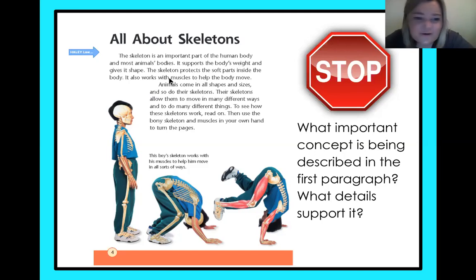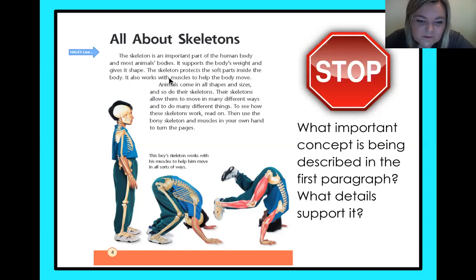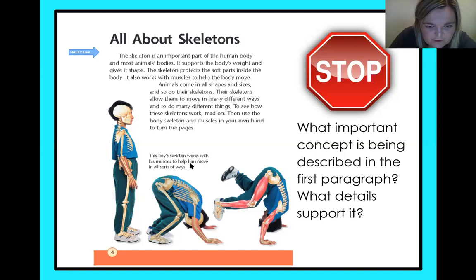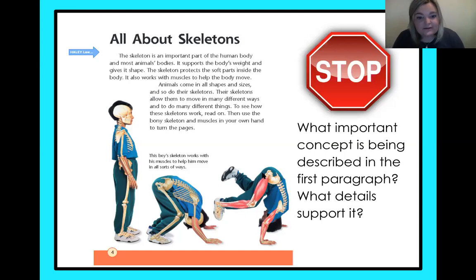Animals come in all shapes and sizes and so do their skeletons. Their skeletons allow them to move in many different ways and to do many different things. To see how these skeletons work, read on. Then use the bony skeleton and muscle in your own hand to turn the page. This boy's skeleton works with muscles to help him move in all sorts of ways. His arm muscle is holding his weight, and his leg kicks him up — all those muscles are working. Pretty cool stuff.